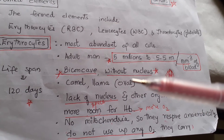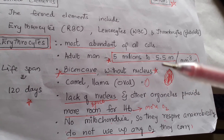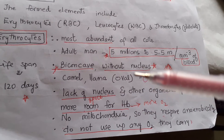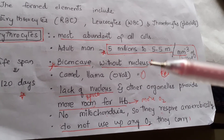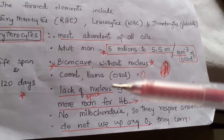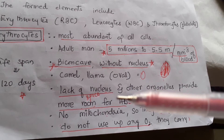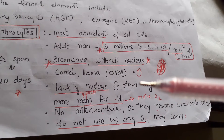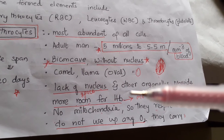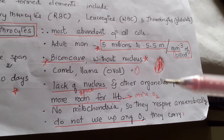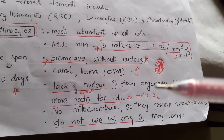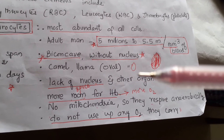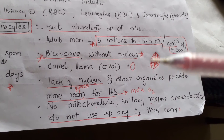Erythrocytes are without a nucleus. In camel and llama, they are oval and have nucleated RBCs. The lack of nucleus is very advantageous to the animals, and along with the nucleus, other organelles are also absent. This provides more space for hemoglobin to carry more oxygen.